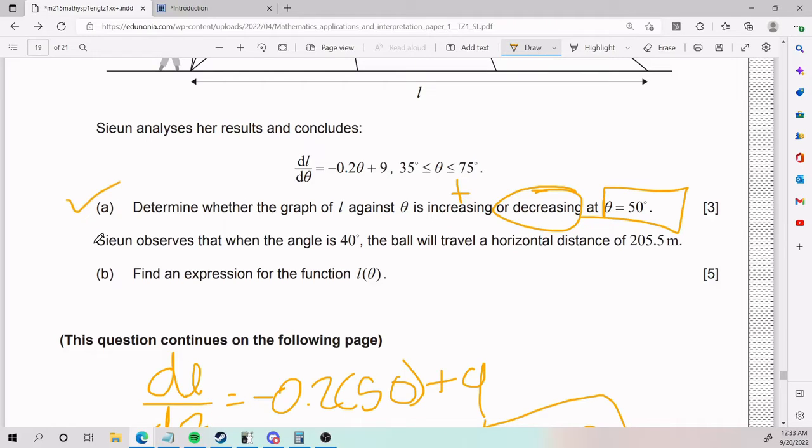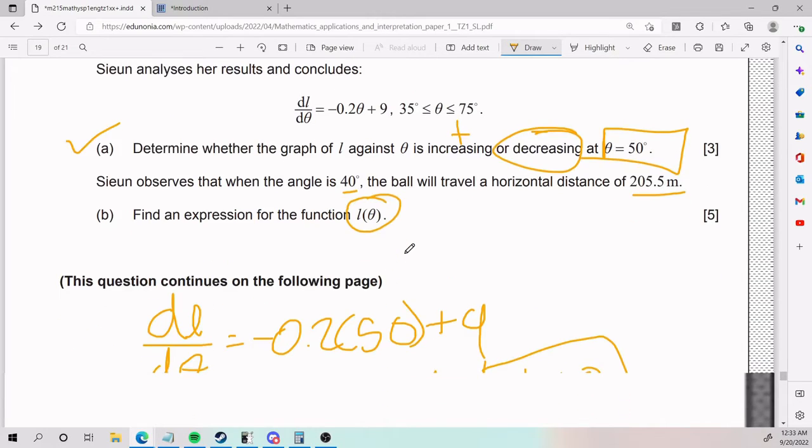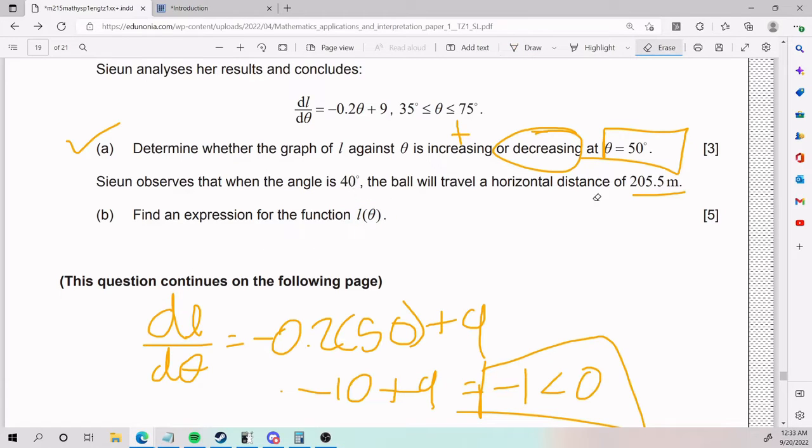Then we have that Sion observes that when the angle is 40 degrees, the ball will travel a horizontal distance of 205.5. Find an extraction of the function L(θ). Okay, so the tough part here is understanding what the heck to do.